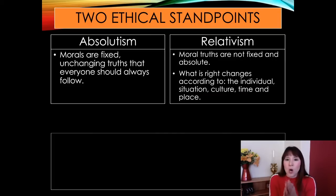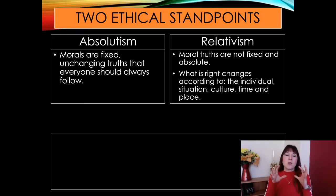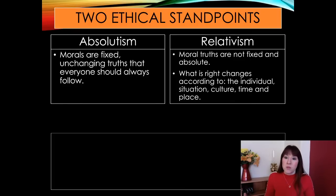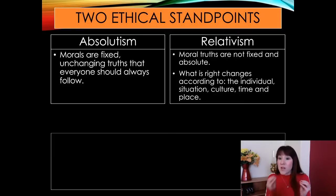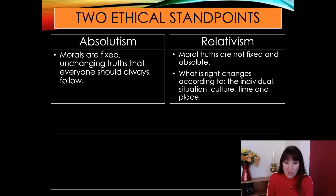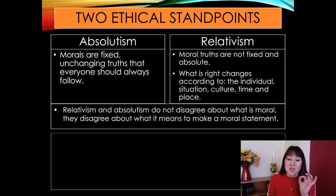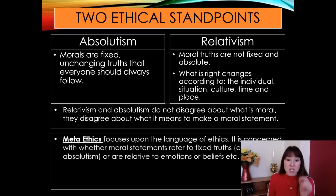We must start by having a look at the view that there are two ethical standpoints — two ethical approaches you can take: absolutism and relativism. Absolutism is where morals are fixed, unchanging truths that everyone should follow, whereas with relativism they're not fixed, not absolute — they change depending on the individual, culture, time, place, whatever it might be. Relativism and absolutism do not disagree about what is moral; they disagree about what it means to make a moral statement, and this is where meta ethics comes in.